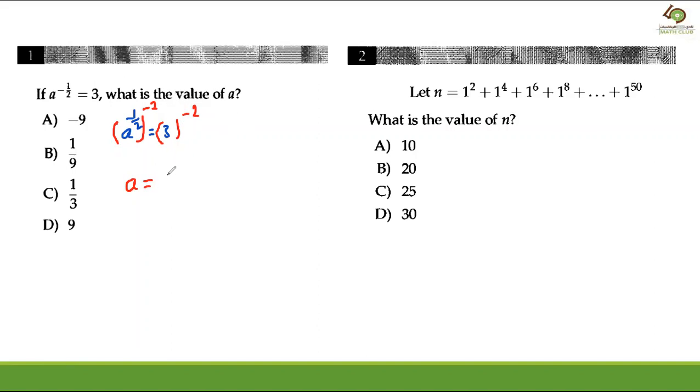Because the exponent is negative, you must change to positive, right? So you flip the fraction and you put one over three to the power two, right? So a equals what? One over nine. So the answer is going to be B.